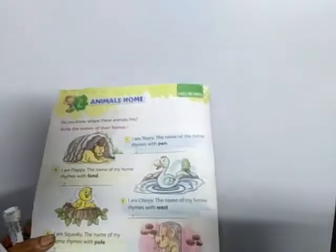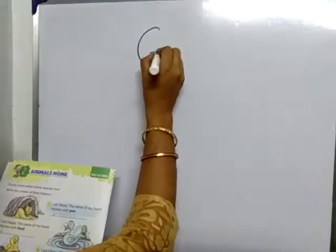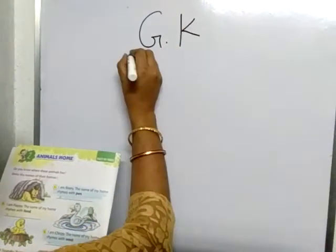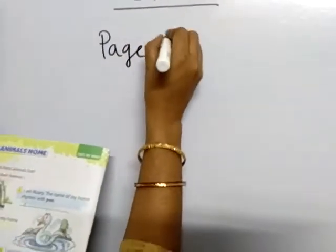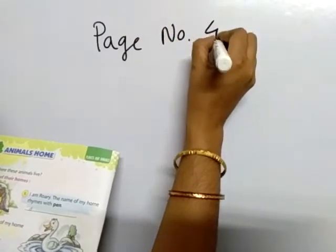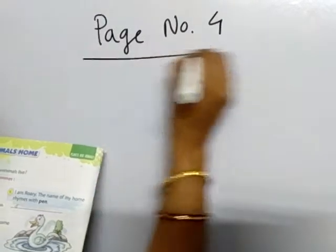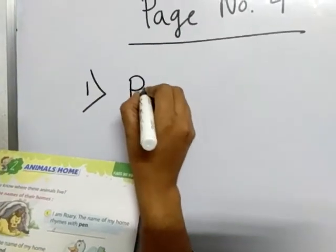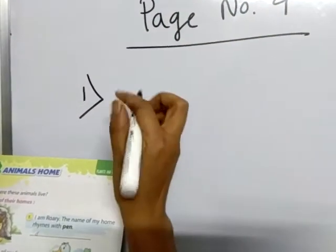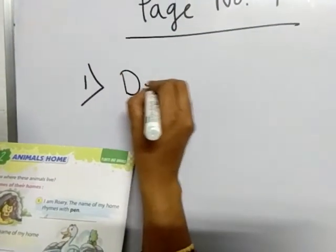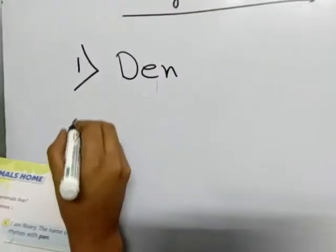Here is space, page number 4. GK, page number 4. Number 1: pen — rhymes with pen is den, D-E-N, den.